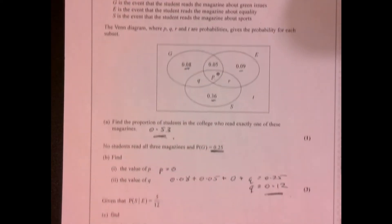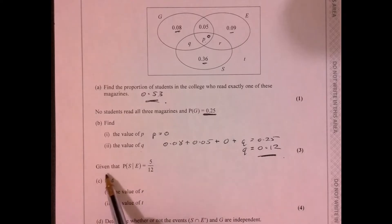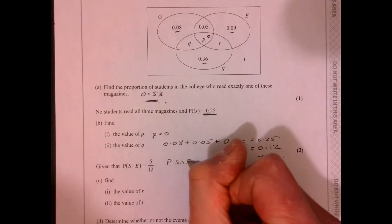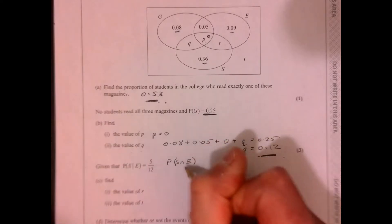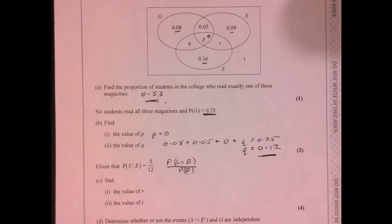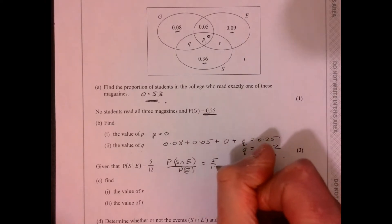Right. Now, slightly trickier stuff. All right, it says given that, right, so probability S given E equals 5 over 12. Right, so we need to make sense of what that means. It means the probability S intersection E, now you should know this, over the probability of E. It's making sense of this given function. And we know that that is 5 over 12.